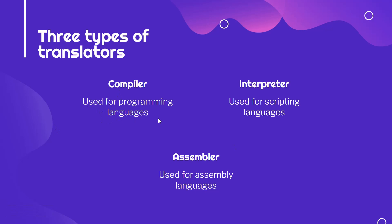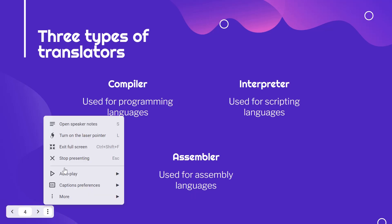Programming and scripting languages are high-level languages we use for day-to-day purposes like websites, application building, video game building, logic development, and backend. Assembler or assembly languages are used for things like robotics and Arduino. You don't have to think too much about assemblers — I just put it out there so you know there are actually three types of translators, but compilers and interpreters are the two types most programmers commonly use.